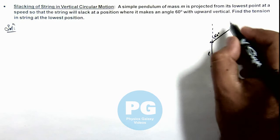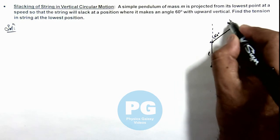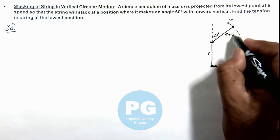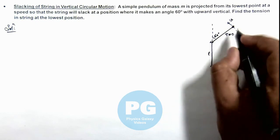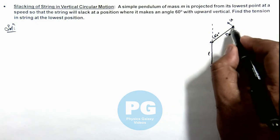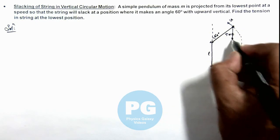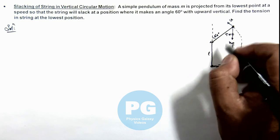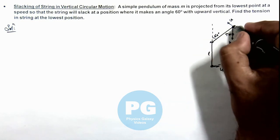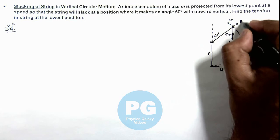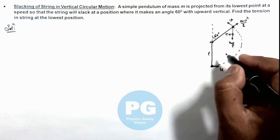And here, say if its speed is v, then at this point tension in string becomes zero. At this point, the bob is experiencing mg in downward direction, and in the rotating frame we can consider it is experiencing centrifugal force mv² by l in outward direction.